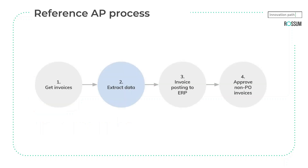This is a typical accounts payable process. It consists of four major steps. The first step is that you need to get the invoices — they might come by email or by mail, requiring scanning. Then you need to extract data. When you have the data extracted, you need to post it to accounting software or your ERP system. The fourth step means that if you have non-PO invoices, you need to approve them in a workflow process.